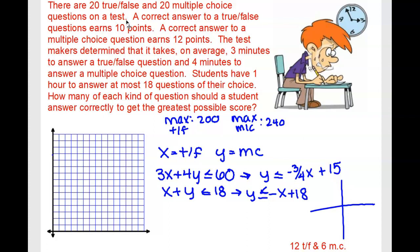Okay, there are 20 true/false and 20 multiple choice questions on a test. A correct answer to a true/false question earns 10 points. A correct answer to a multiple choice question earns 12 points. The test makers determined that it takes, on average, three minutes to answer a true/false, and four minutes to answer a multiple choice. Students have one hour.